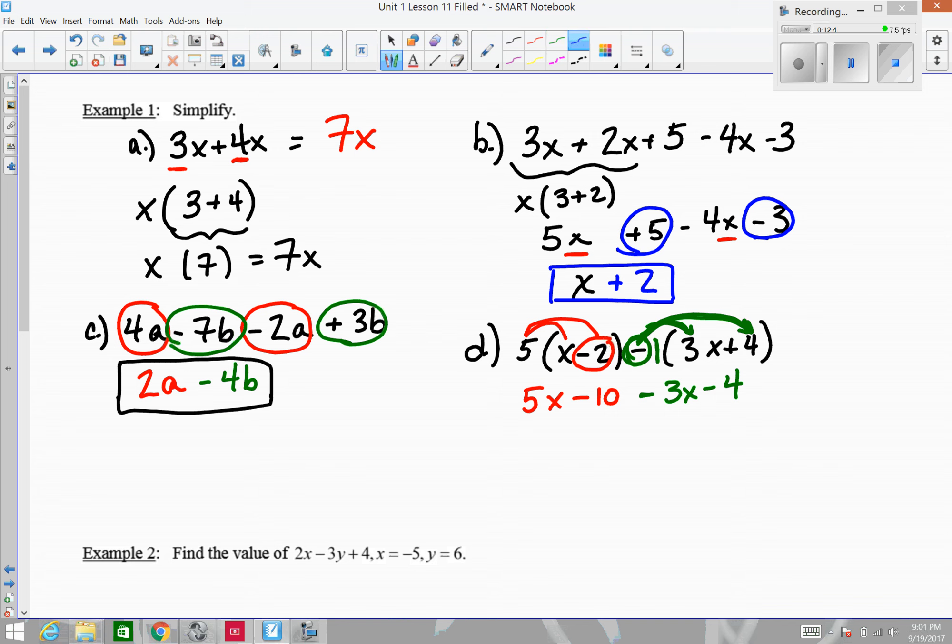Now I'm looking for like terms to combine. We've got 5x and negative 3x's that can be combined. That will leave us with 2x's. And then we have negative 10 or minus 10 and minus another 4 for a total of minus 14. And since those two are not like terms, we cannot do any more combining.